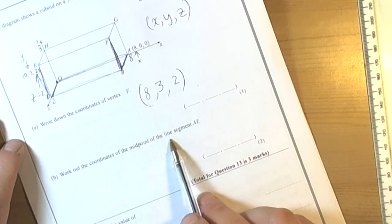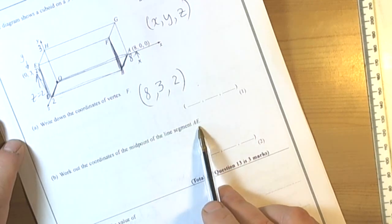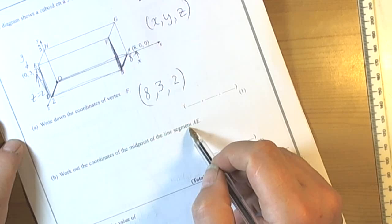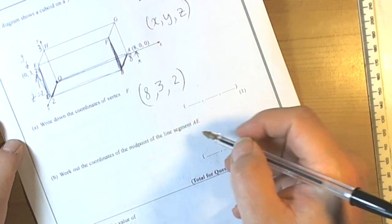The second part of the question wants us to work out the midpoint of the segment AE. So midpoint of coordinates always have the 2 coordinates and then halve it. So let's have a look,